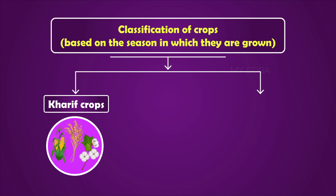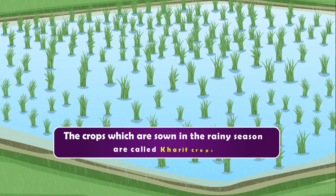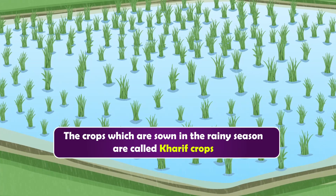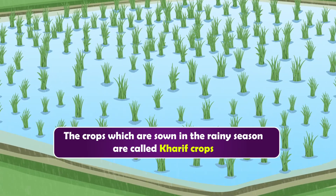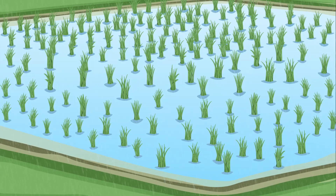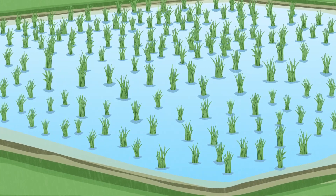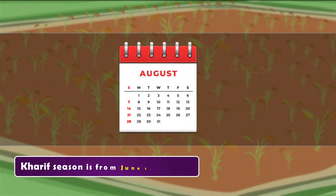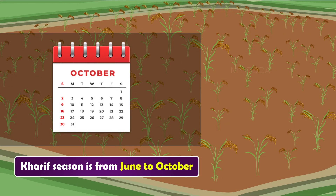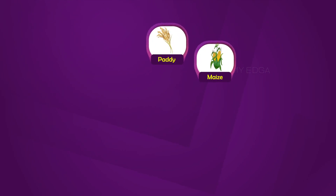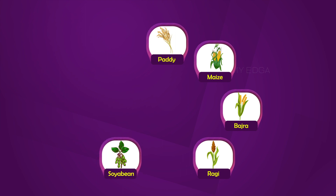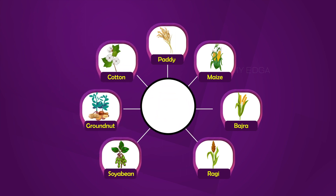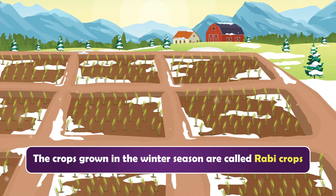The crops which are sown in the rainy season are called Kharif crops. These crops are usually sown at the beginning of the monsoon season around June and harvested by September or October. Paddy, rice, bajra, ragi, soya bean, groundnut, and cotton are all Kharif crops.